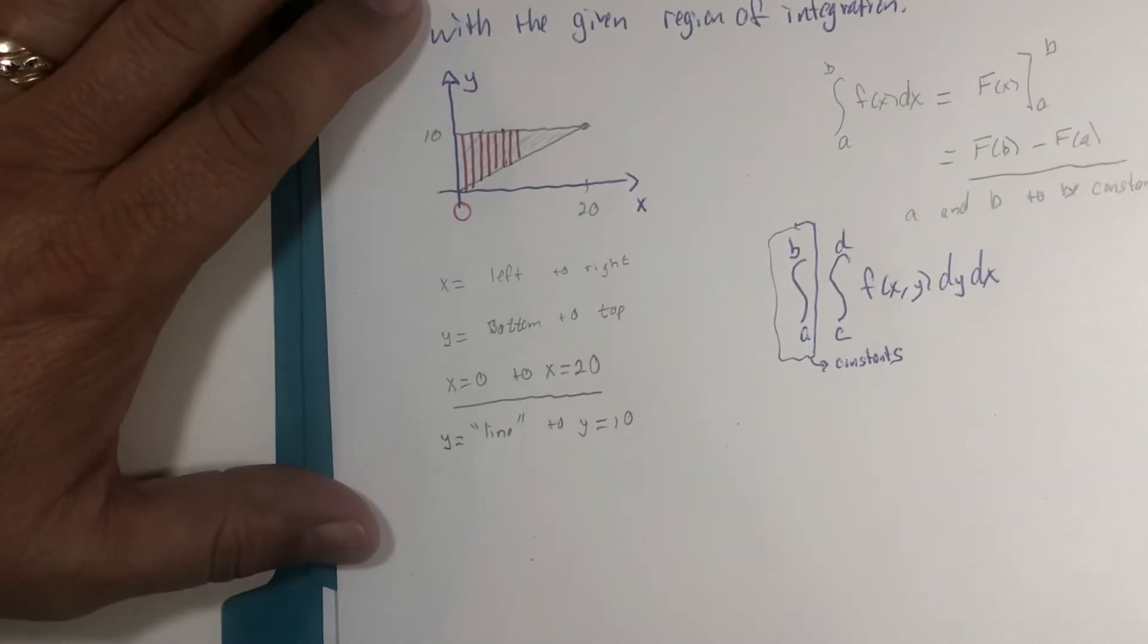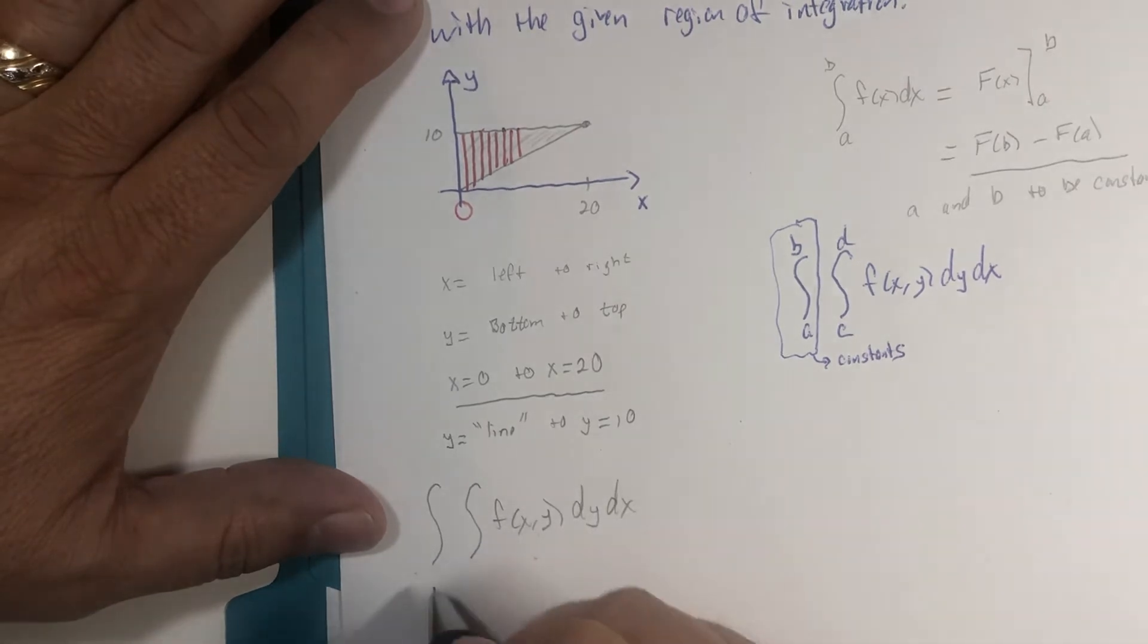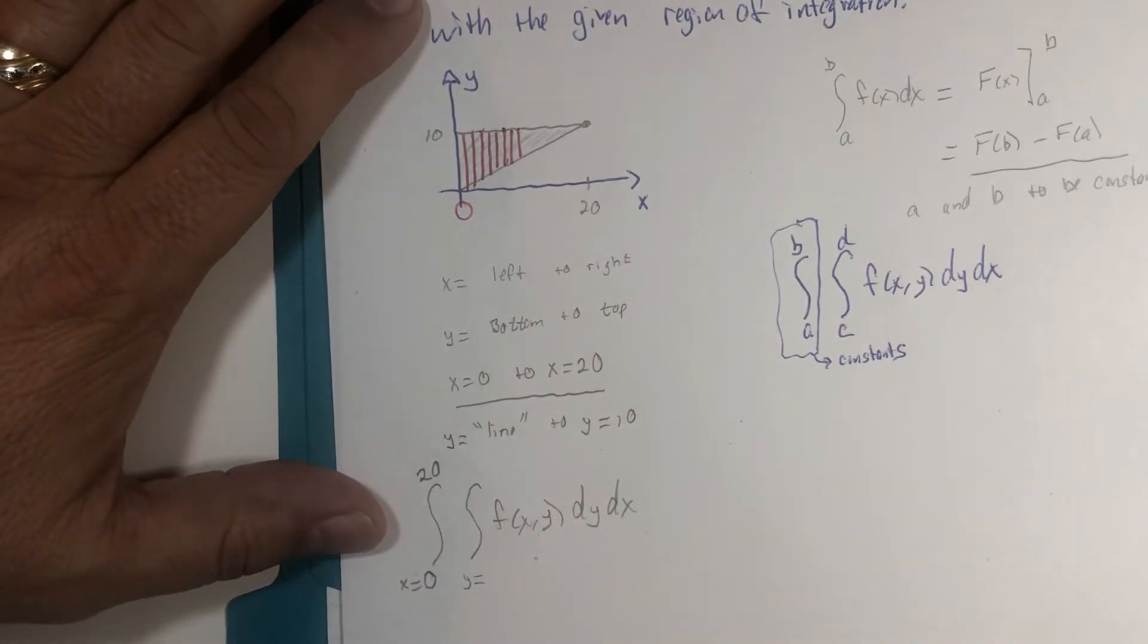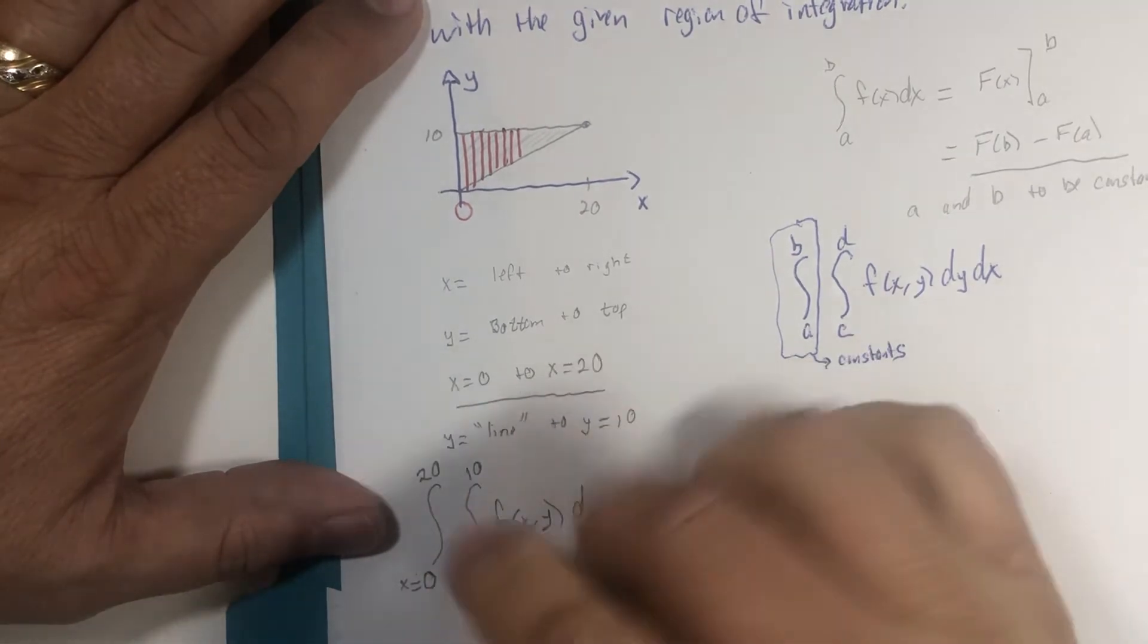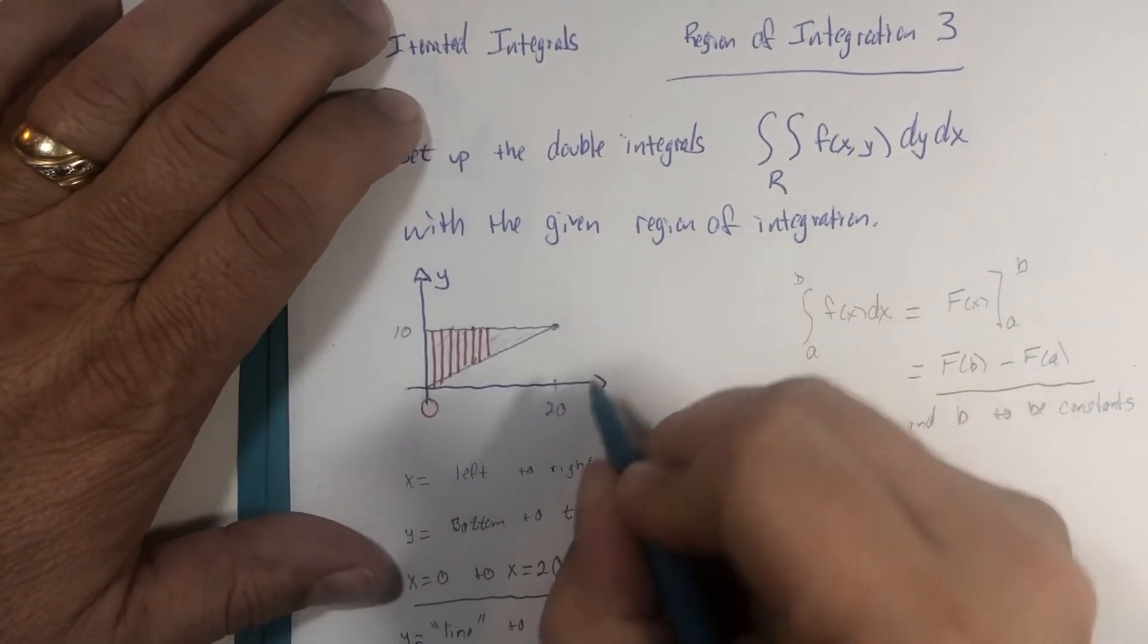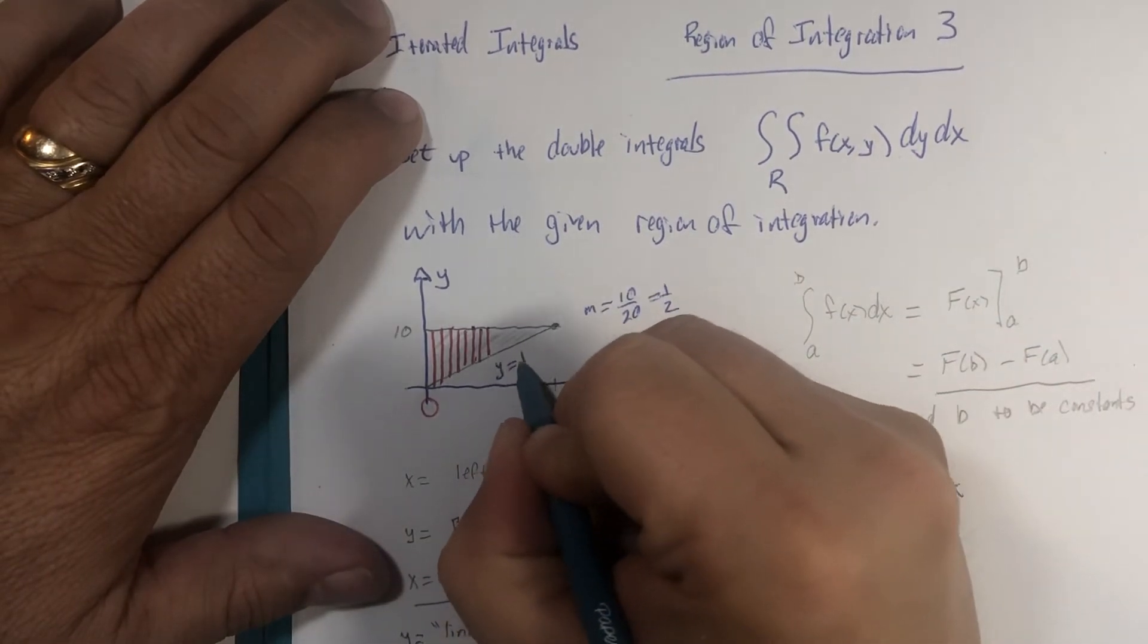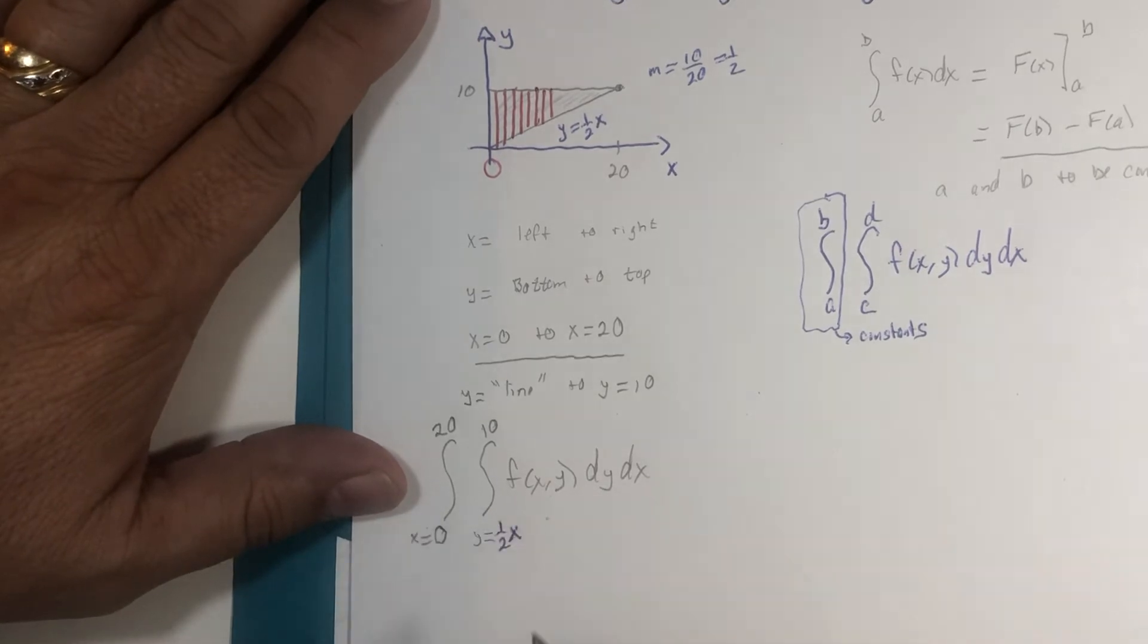So as we gear up to write our double integral, recall that this is going to be the x integration and this is going to be the y integration and x goes from 0 to 20. But then the y values, they are varying between this line and this top boundary, which is y equals 10. The top boundary is constant, but the bottom boundary is not. So now let's look at the line real fast. We have a line that goes from here to here. Its slope is up 10 and over 20, otherwise known as 1 half. The equation of that line is y equals 1 half x.